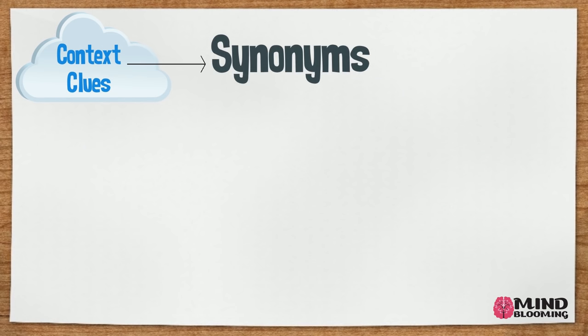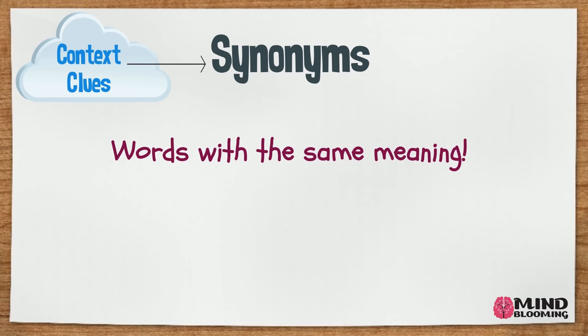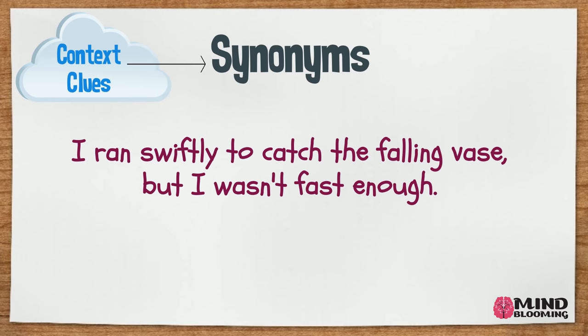Let's see how finding a synonym in the sentence can be a clue to figure out the meaning of a word. Remember that synonyms are words with the same meaning. I ran swiftly to catch the falling vase, but I wasn't fast enough. If I don't know the meaning of swiftly, the next part of the sentence gives me a clue. It says that I wasn't fast enough, which means that I must have been running fast. That means the word swiftly means fast.